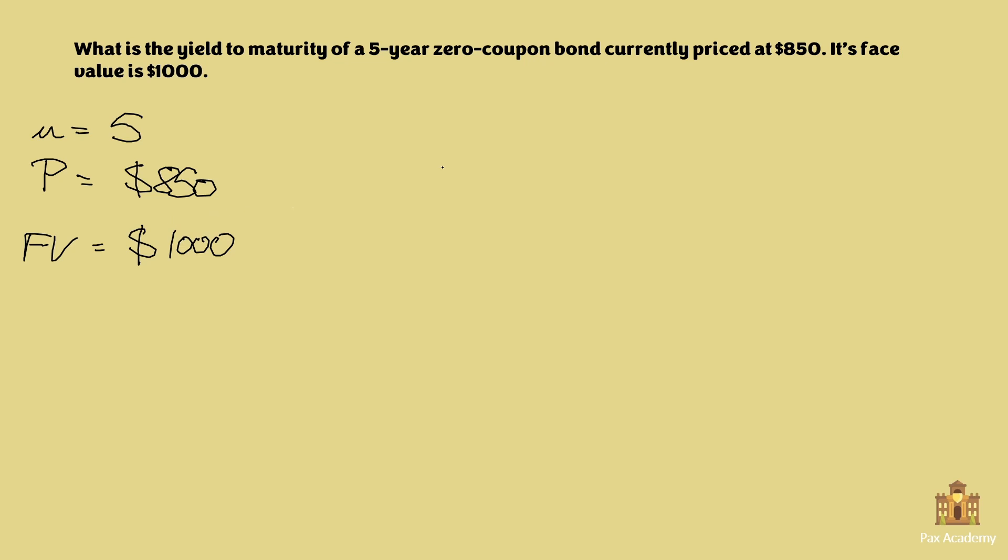Now we have everything we need to use the formula. The formula is YTM, yield to maturity of n amount of periods, so in this case five, is equal to the face value of the bond, one thousand, over its current market price which is eight hundred and fifty, everything in brackets to the power of one over n, so one over five in our case, minus one.